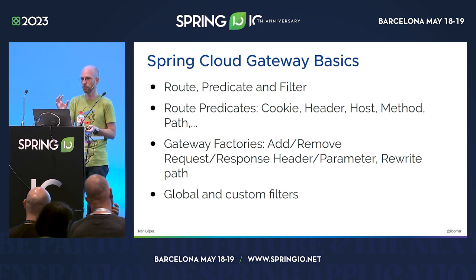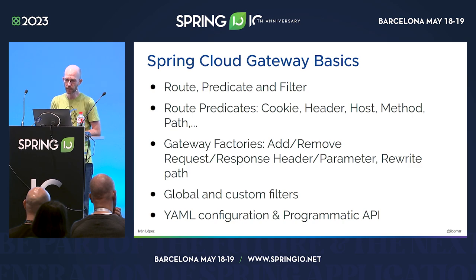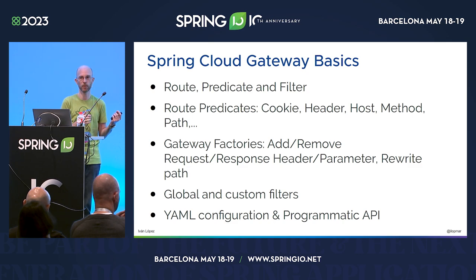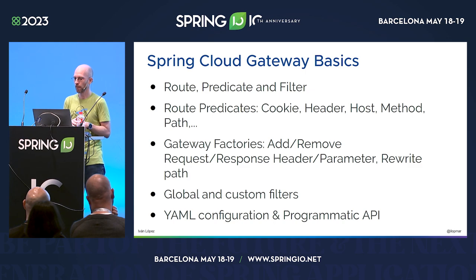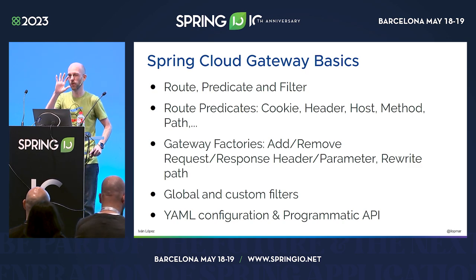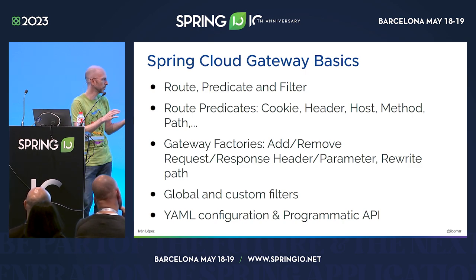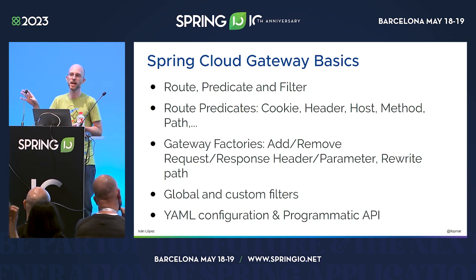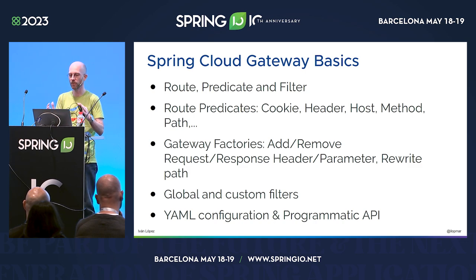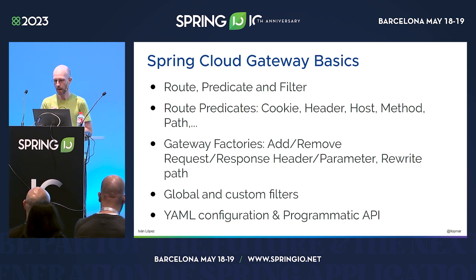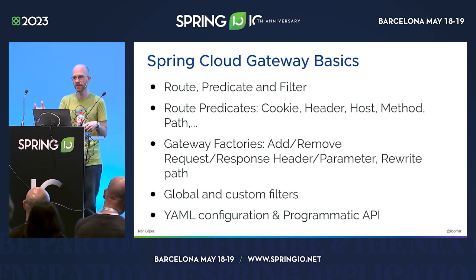There is also the concept of global filters. You can create your own filters or factories to do whatever you need that is not covered out of the box. There are two ways to configure Spring Cloud Gateway. One, probably the most common, is YAML configuration — it works really well, and in the documentation, all the factories, filters, and predicates are configured and displayed using YAML. But you can also use the programmatic API, which lets you do even more at runtime. It's not as well-documented as YAML, but once you start using it with your IDE, it's pretty easy.